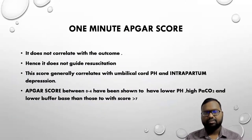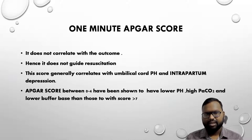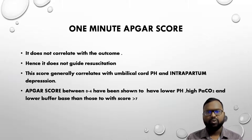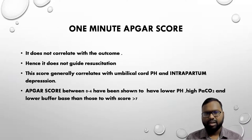Now let's discuss the significance of the one-minute APGAR score. It does not correlate with outcome and it does not guide resuscitation. This score generally correlates with cord blood pH and intrapartum depression. APGAR scores between 0 to 4 have shown lower pH, higher pCO2, and lower base excess than those with scores more than 7. However, in very low birth weight babies, even a 0 to 4 APGAR score may have pH more than 7.25, so it does not indicate severe depression in the case of very low birth weight.